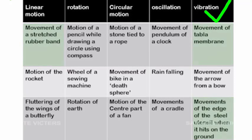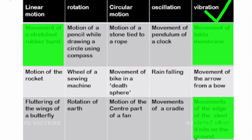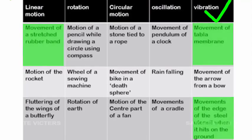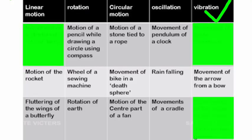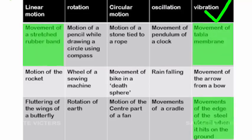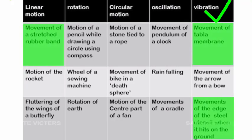Examples of vibration include: movement of a tabla membrane when it is hit, and movement of the edge of a steel utensil when it hits the ground.